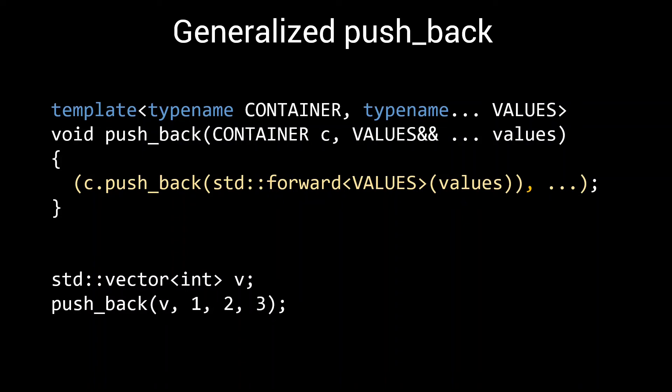Note that our fold is a right fold, meaning that the resulting expression is v.pushback(1), and then in parentheses, the pushback of 2 and 3. However, since the comma operator has precedence over the parentheses, and it executes its operations from left to right, the pushbacks still happen in the correct order. First 1, and then 2 and 3.